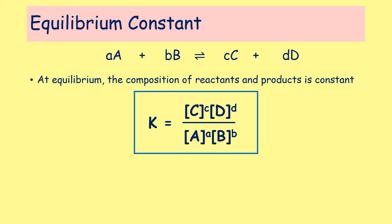The equilibrium constant K is equal to the concentration of product C raised to the power of the stoichiometry of C, multiplied by the concentration of product D raised to the power of its stoichiometry. That is divided by the same thing for the reactants: [A] to the power of small a, multiplied by [B] to the power of small b.